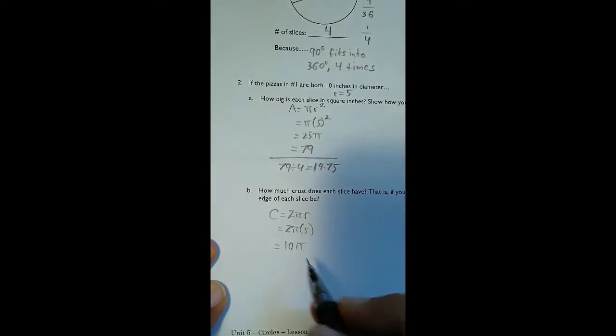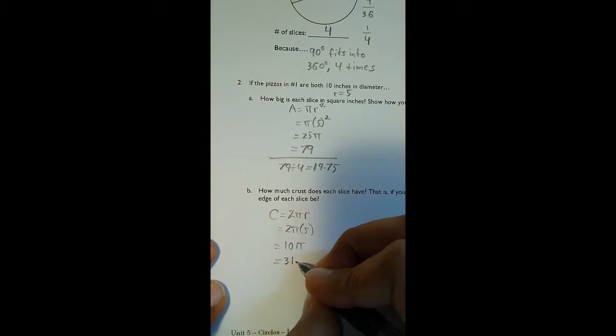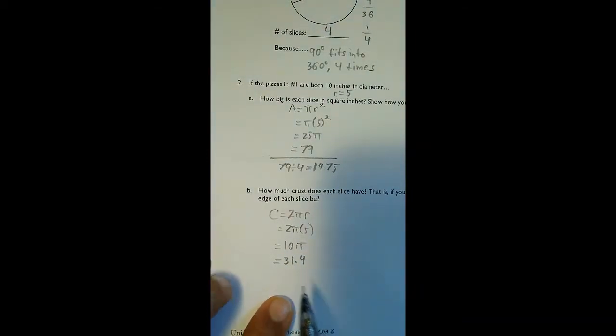10 times 3.14 equals 31.4. That's our circumference. That's the total distance around the outside of the whole circle.